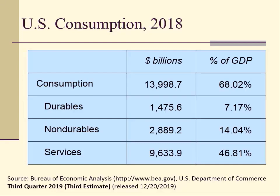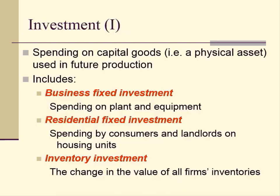This table shows US consumption in 2018. Total consumption was approximately $13.9987 trillion, which was 68.02% of GDP. Durables consisted 7.17% of GDP ($1.4756 trillion), non-durables were 14.04% ($2.8892 trillion), and services were 46.81% ($9.6339 trillion). US consumption is roughly two-thirds of US GDP, and among those components, services counts for nearly half of US GDP.